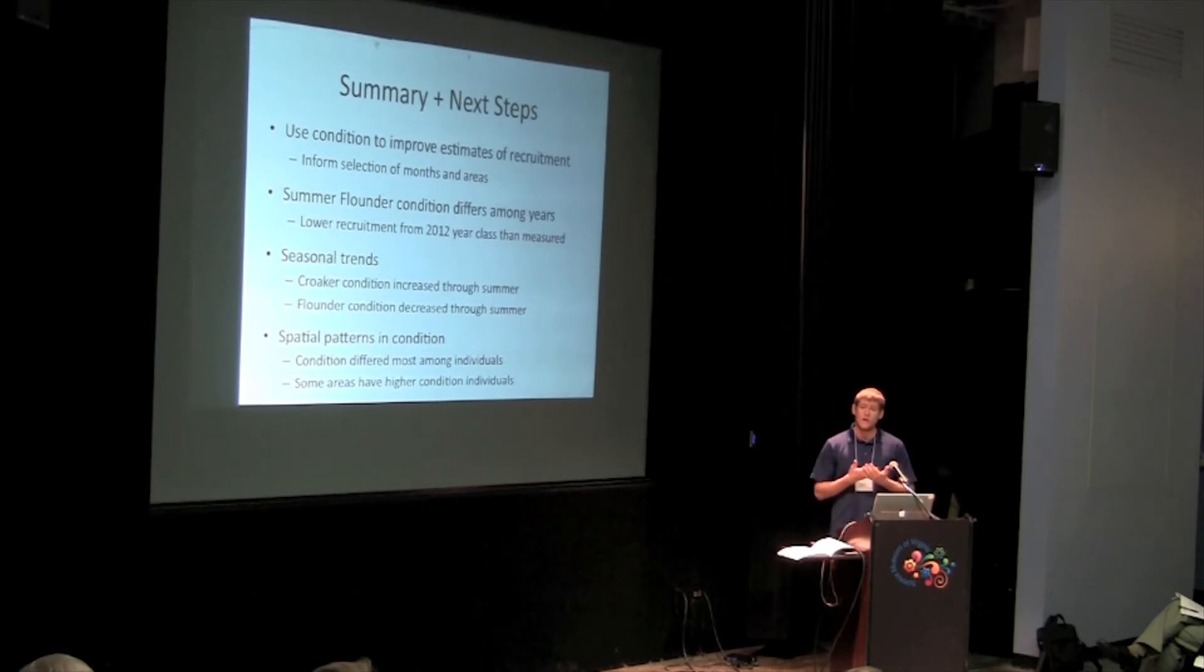However, as you saw, we did see condition trends among different areas of the bay. Some had higher condition than others. For summer flounder, the high condition fish were seen in Oyster and in the James River. Whereas for Atlantic croaker, the higher condition fish were seen in the upper and middle bay regions. So those areas might have good habitat that support croaker and flounder in healthier condition. So we may want to base our recruitment estimates in those areas.